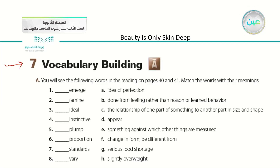The first word is emerge, which means something that comes into existence from nowhere. Number two: famine, which means when people die from starving or a shortage of food. Number three: ideal is a perfect situation. Number four: instinctive refers to something that happens according to the instinct — happening according to feeling rather than reason. Number five: plump means a chubby or stocky person. Number six: proportion means the suitability or fitness of something with another. Number seven: standards are the measures of something. And the last word: vary means the differences or changes of something.